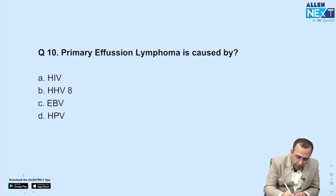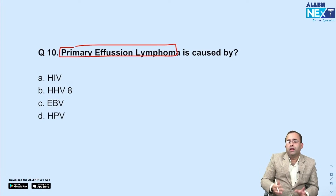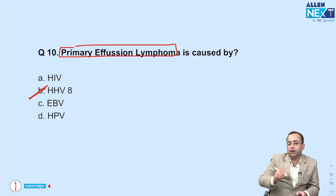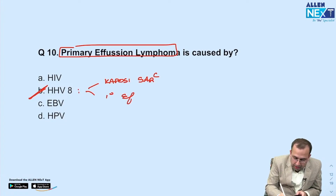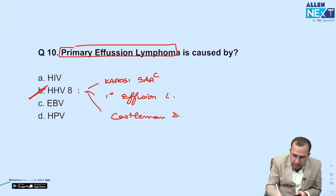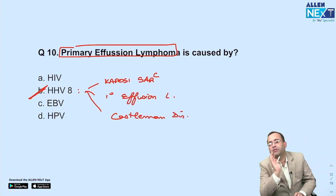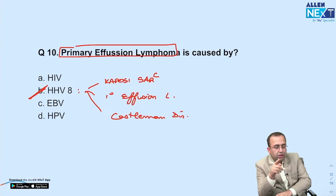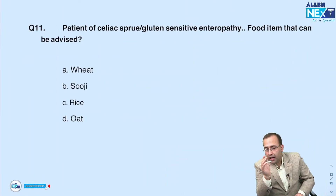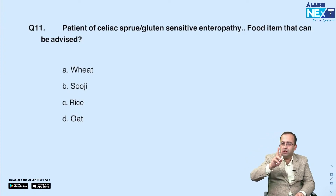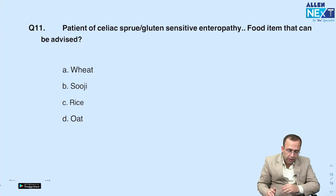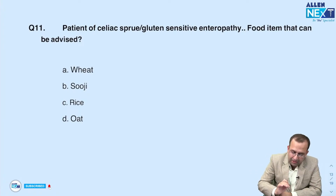Primary effusion lymphoma: it is associated with HHV-8. HHV-8 is associated with three diseases: Kaposi sarcoma, primary effusion lymphoma, and Castleman disease. For juniors — the most common malignancy with HIV is non-Hodgkin's lymphoma, followed by Kaposi sarcoma. So Kaposi sarcoma is associated with two viruses: HIV and HHV-8.